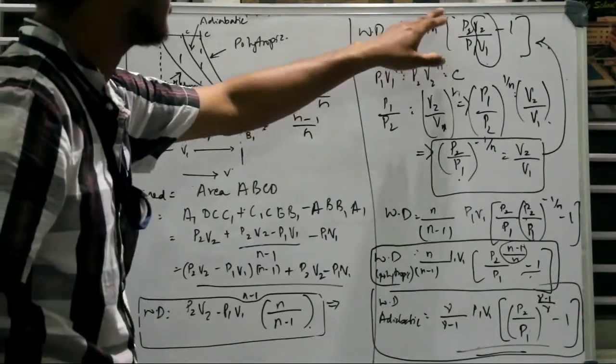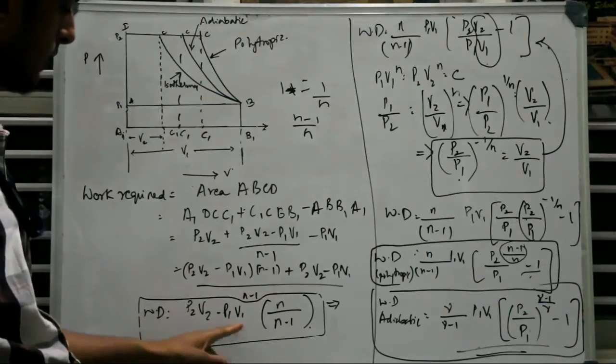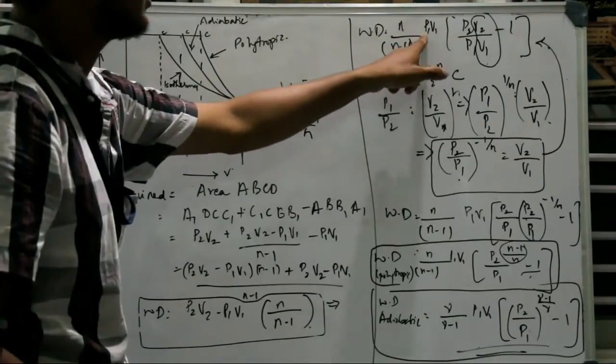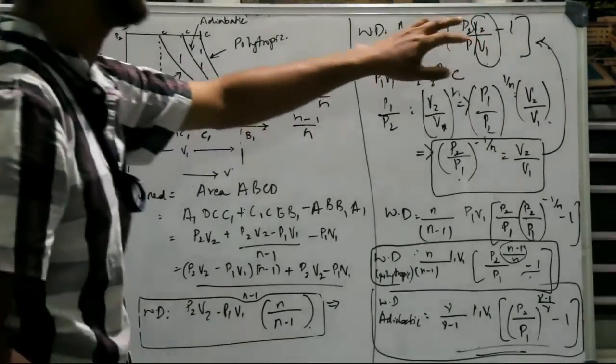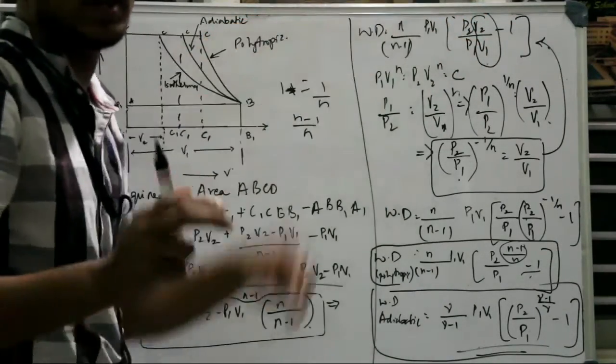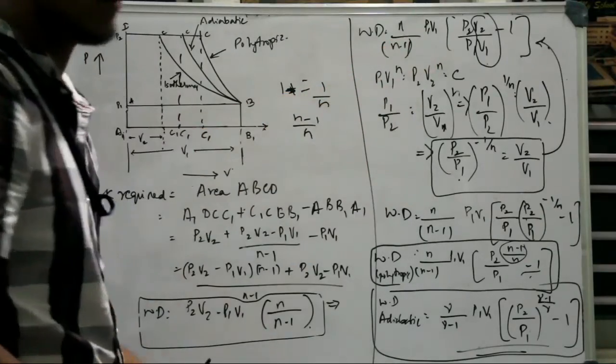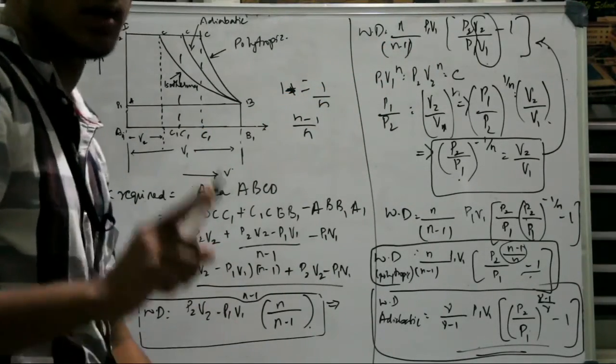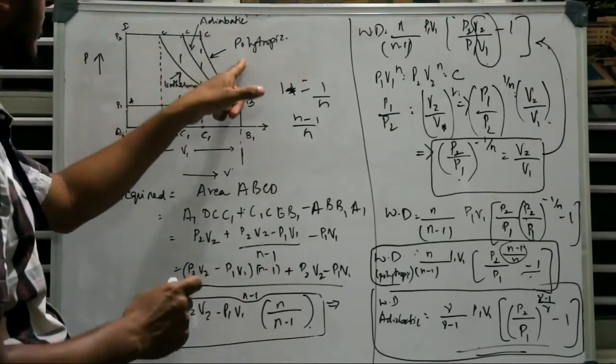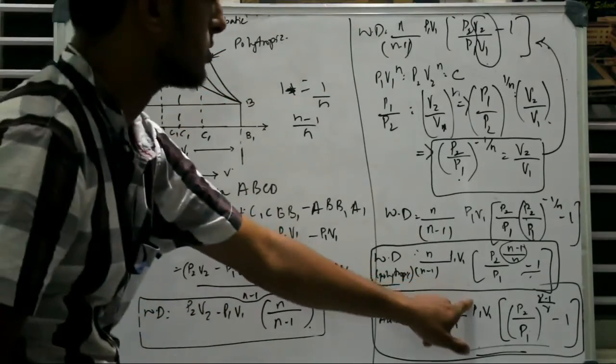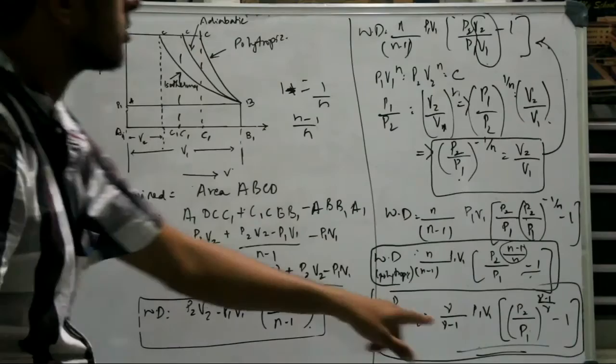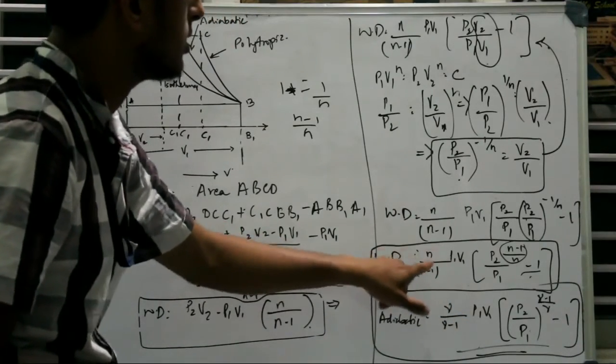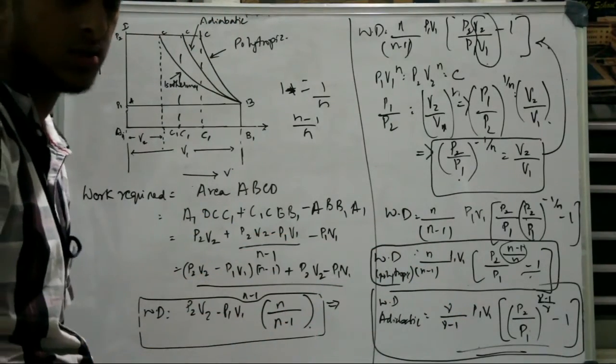The reason we take common factor from this expression, the P1 V1, we take it as common factor and write it because the initial conditions P1 V1 will always be given to us. So it will be easy for us when we do the problems. Next, coming to, so we are done with the polytrophic process expression here and the adiabatic process. So the gamma replaces N, that is the only difference in the expression.